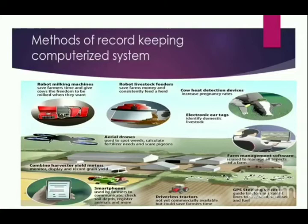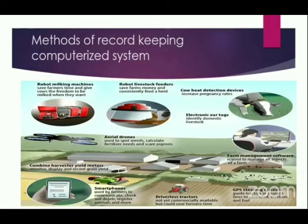We also have computerized systems. With improvement in technology, several computerized systems assist us in keeping records. We have robot milking machines that can determine yield per animal per milking, robot livestock feeders that record what we are feeding and in what quantities, cow heat detection devices that help detect animals on heat and increase pregnancy rates, electronic ear tags that identify domestic livestock especially in big herds, use of aerial drones that spot weeds and animals, combined harvesters for grain crops, GPS systems, and farm management softwares — most of these connected to our smartphones.